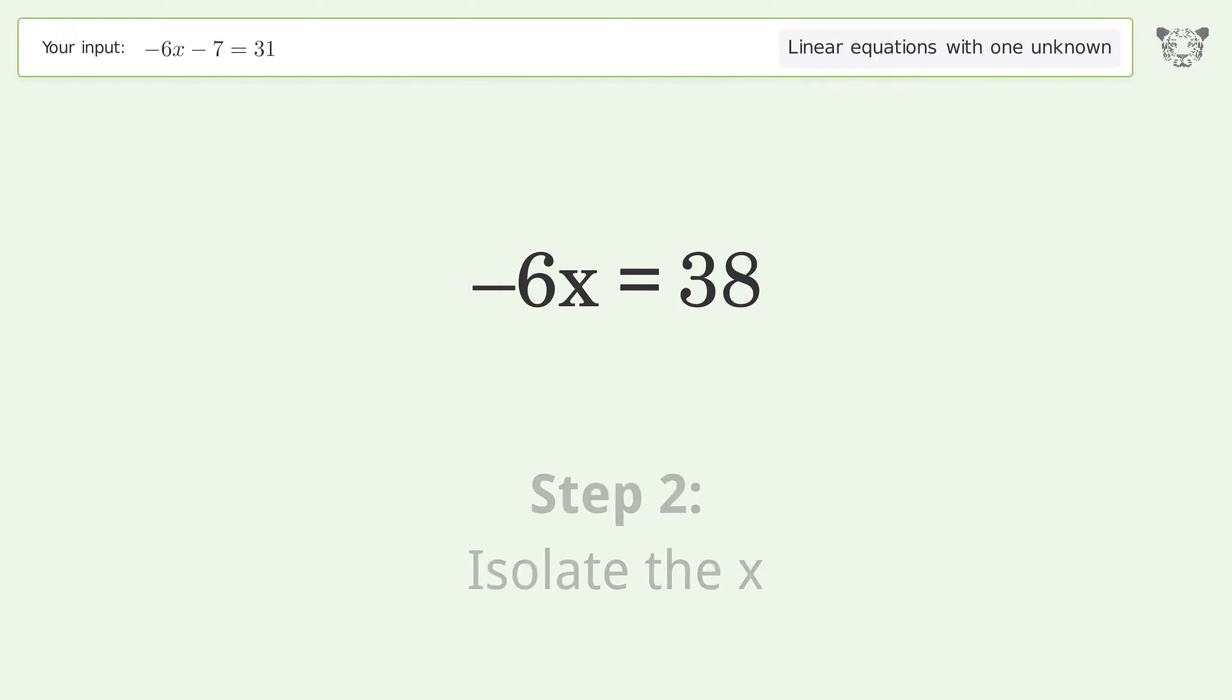Isolate the x. Divide both sides by negative 6. Cancel out the negatives.